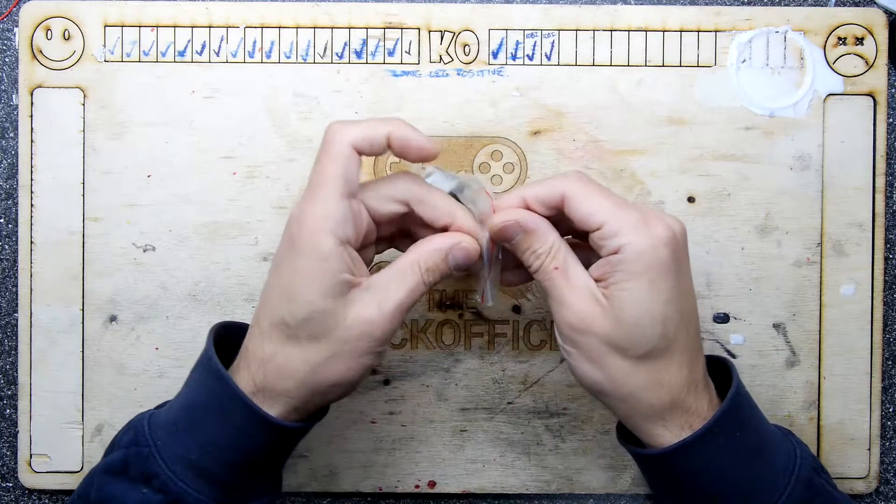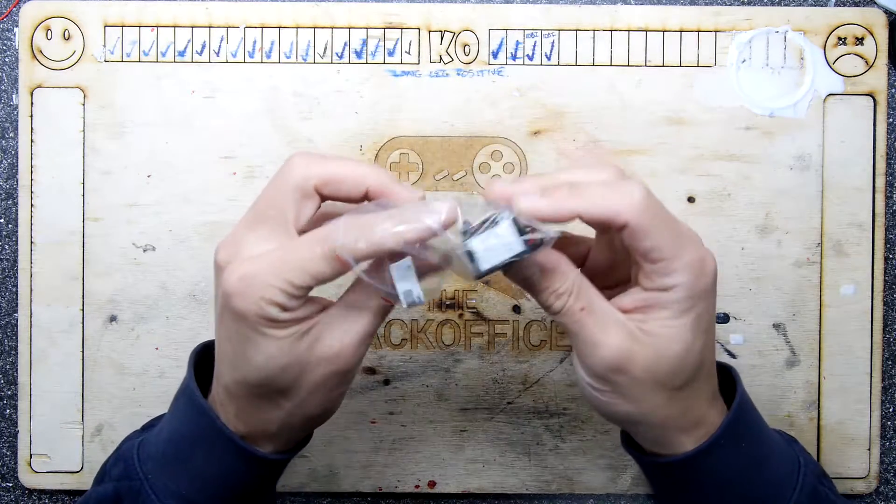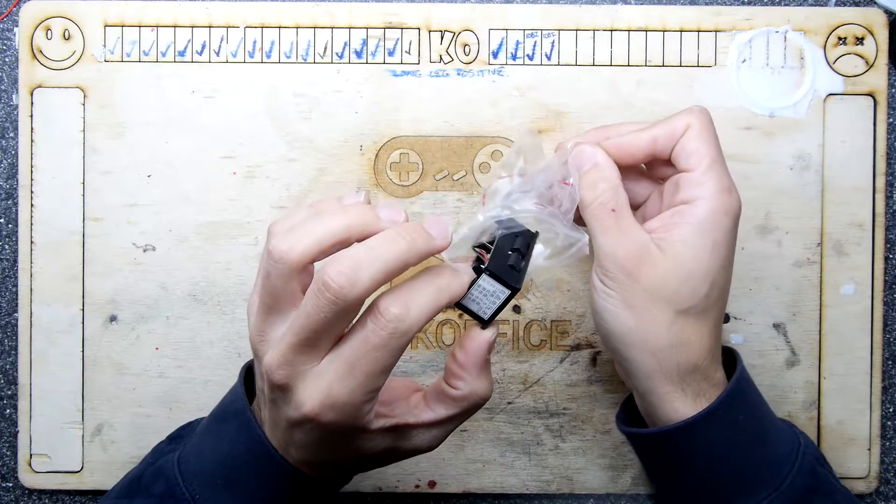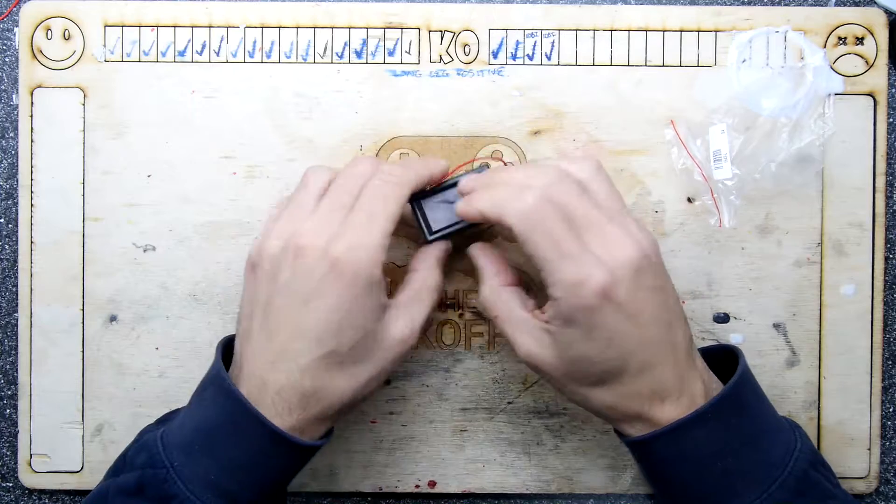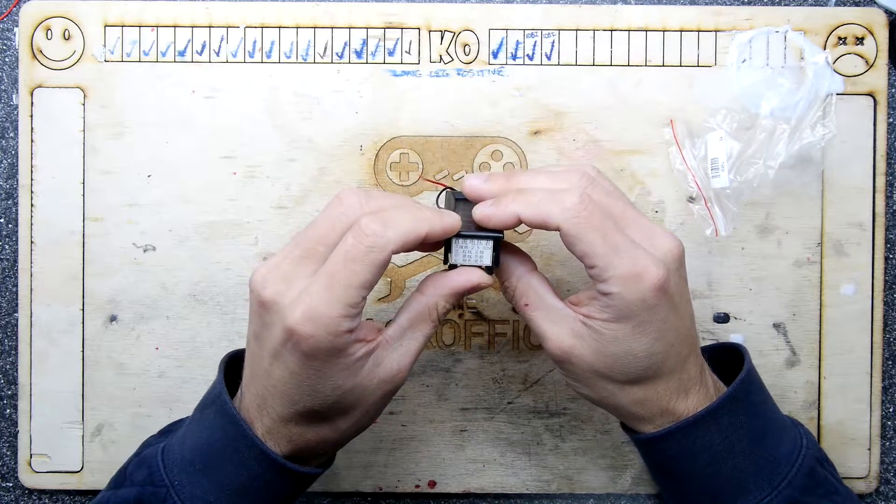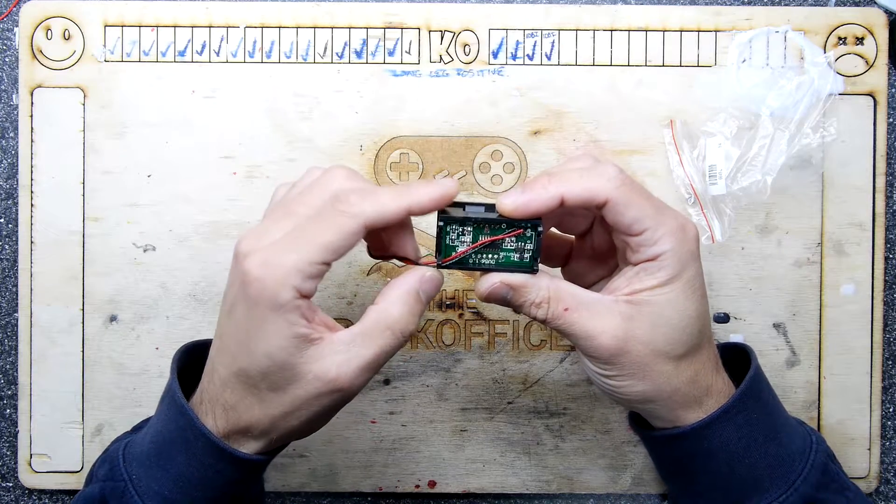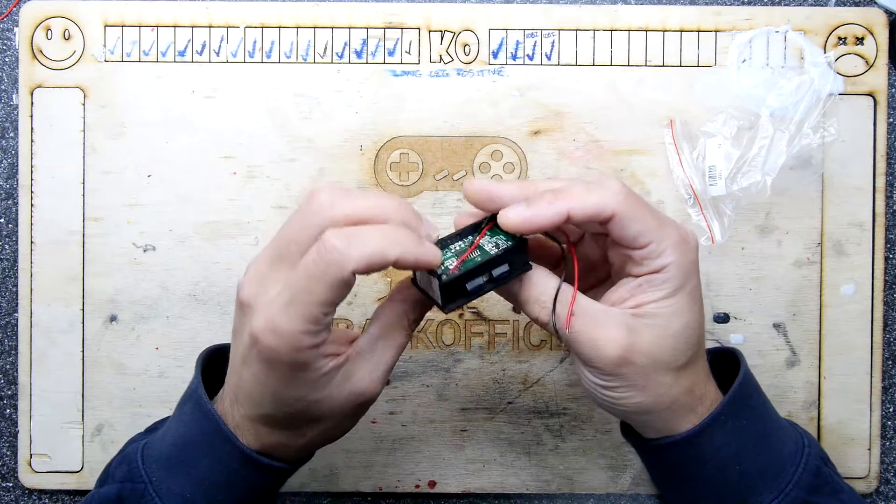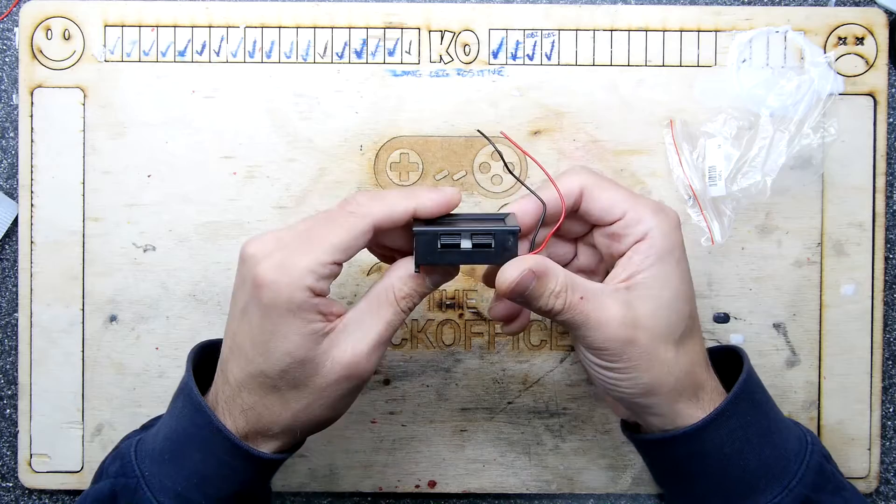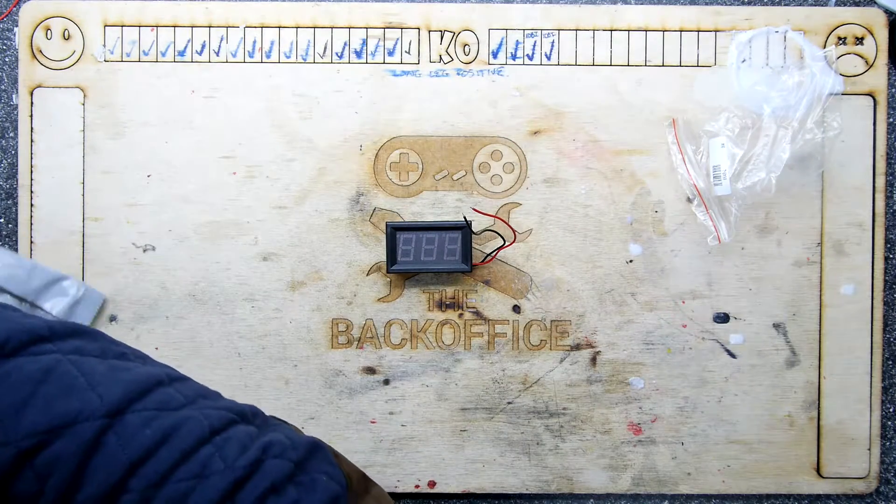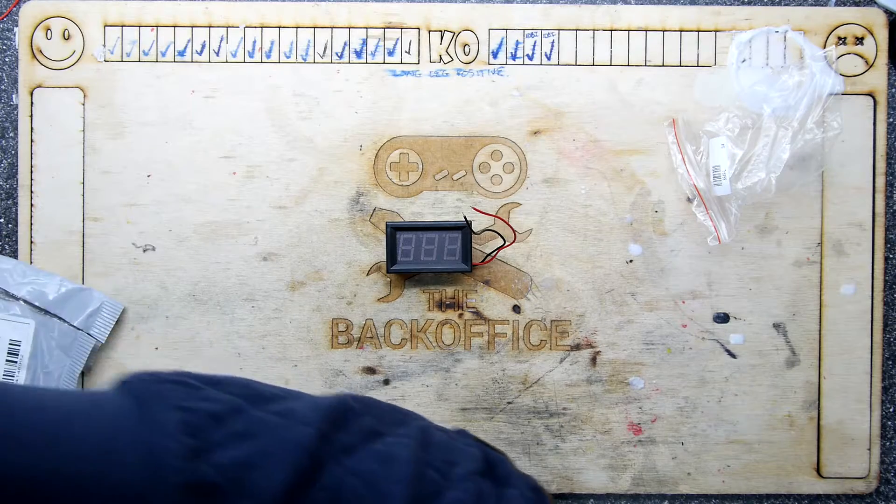That doesn't look like a Parallel Serial PS2, that looks like some sort of voltmeter. 5 to 30 volts. Yeah, what? Two wires. Okay, don't know what this is, but it has a rating on it, let's put some power in it and see what that is.